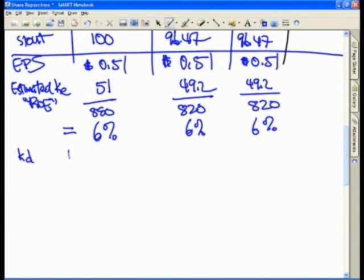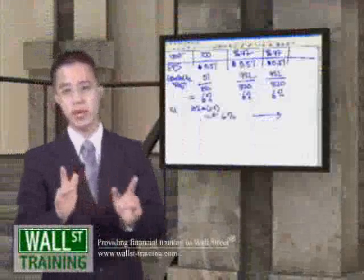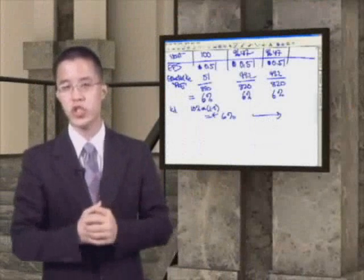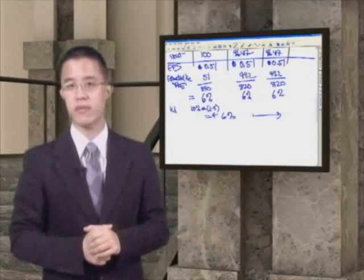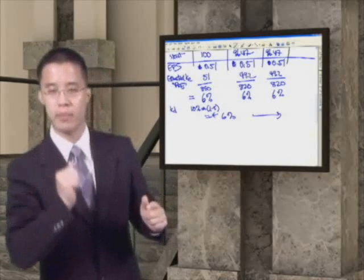Our after-tax cost of debt is simply our 10% times 1 minus T, which is 40%, also gets you 6% in all three scenarios. Therefore, in this particular scenario, there is no change in earnings per share simply because the cost of equity as well as the after-tax cost of debt are exactly identical, therefore the company has not gained by altering the capital structure.